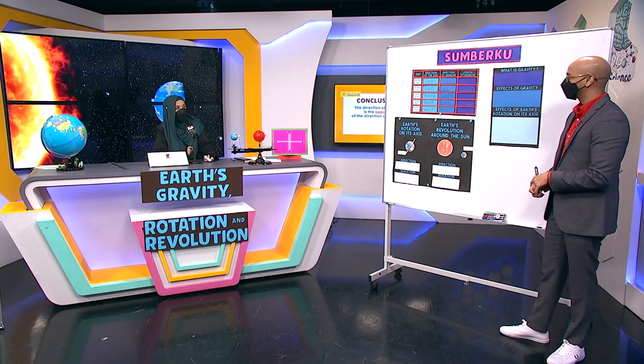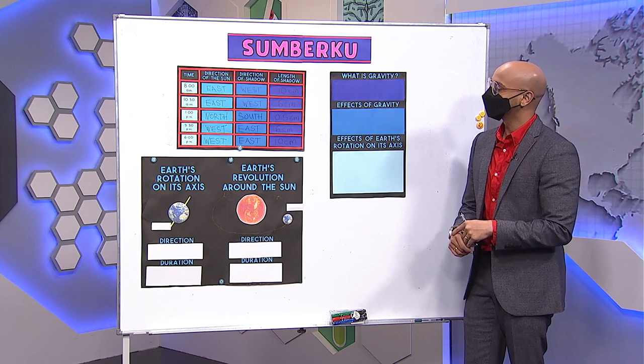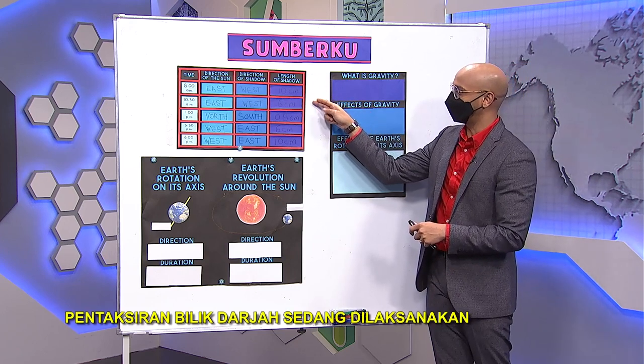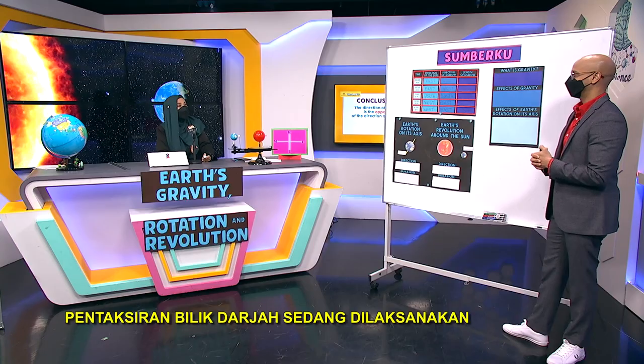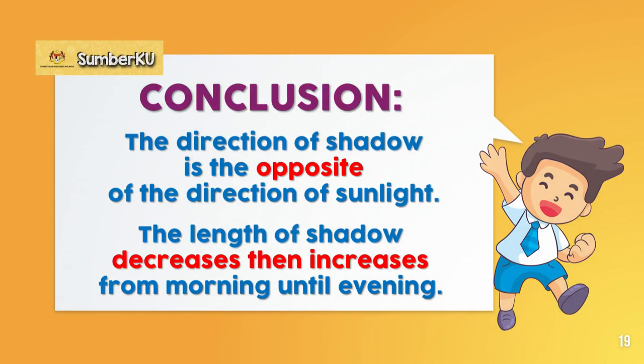The most important part is the length of the shadow — from 10 to 6 to 0.5, then back to 6 and 10. The length decreases from 8 a.m. to 1 p.m., and then increases back toward 6 p.m. So the length of shadow decreases and then increases from morning until evening.